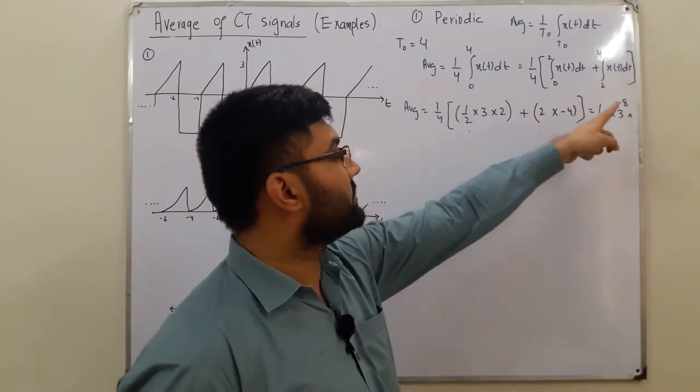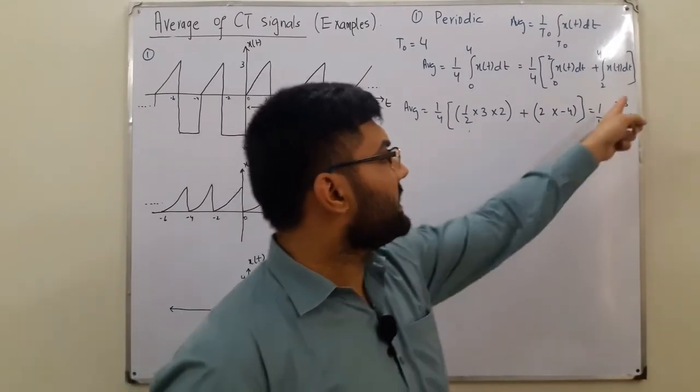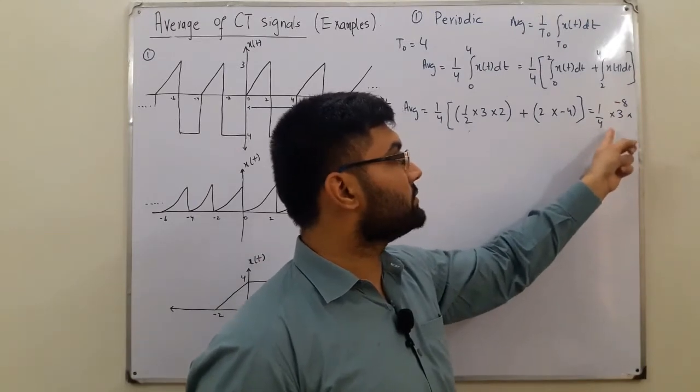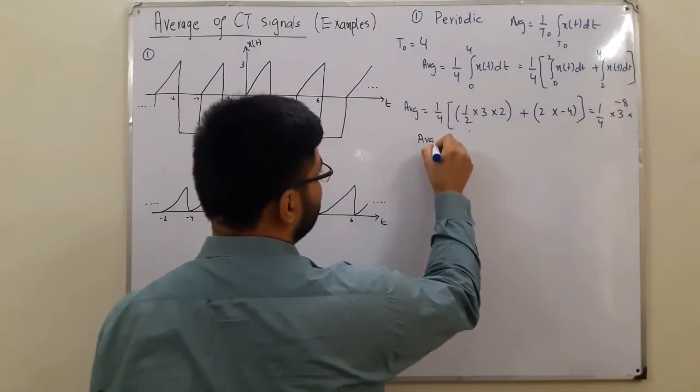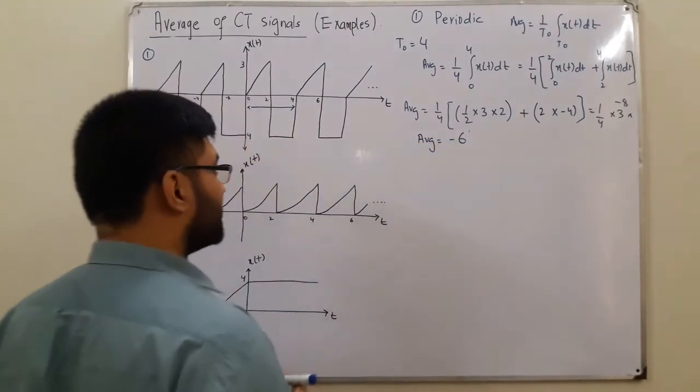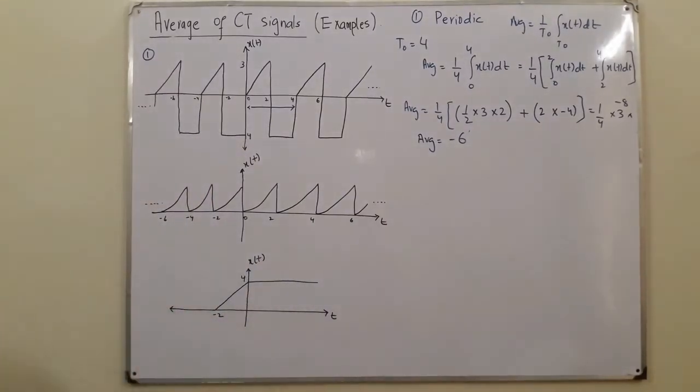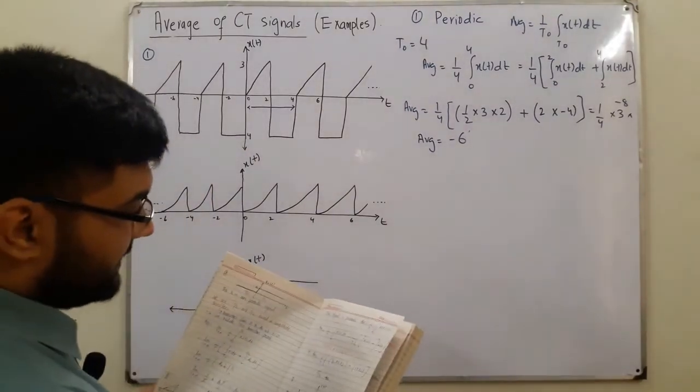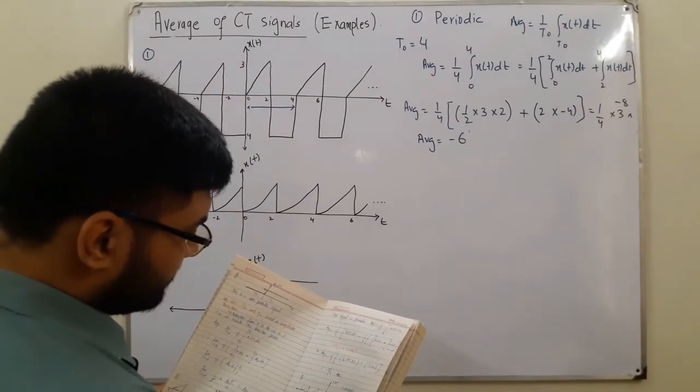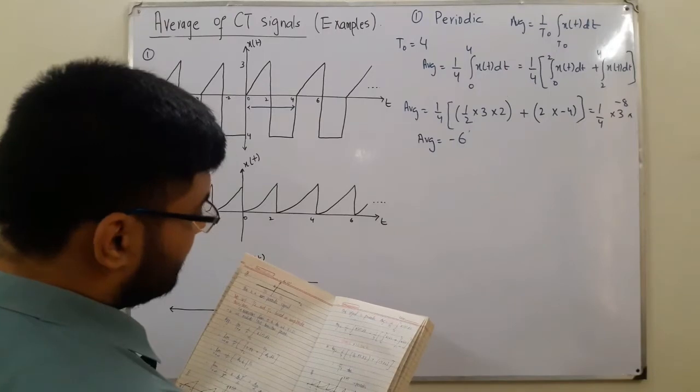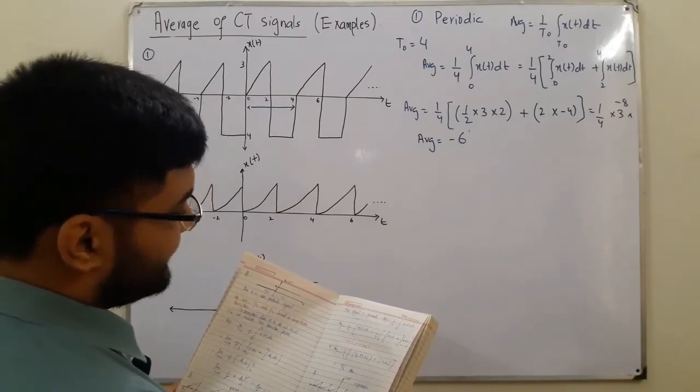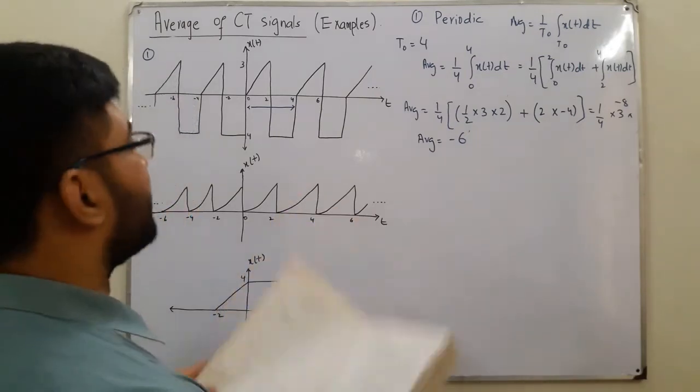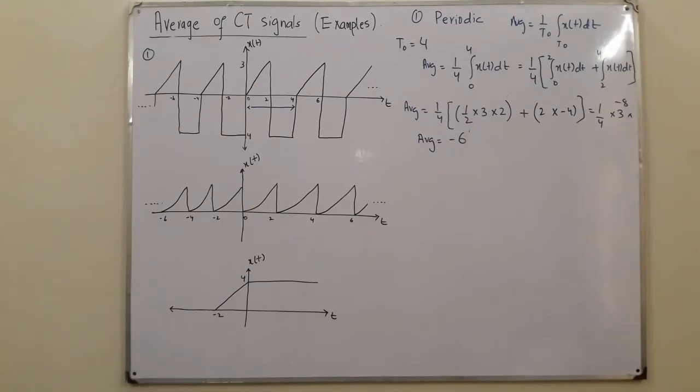So where did I make a mistake? Well, I don't think I have made a mistake somewhere. 8 cancels out with 4, you have 2 threes are 6, so negative 6 is the answer. Average is negative 6. Well over here I don't have a negative 6 answer. Maybe I have a mistake somewhere in the calculations. That is fine, no problem. The second question.